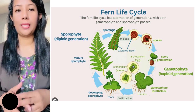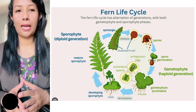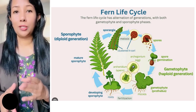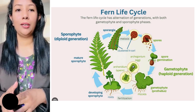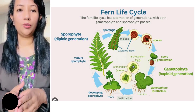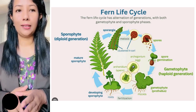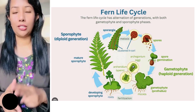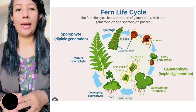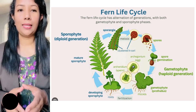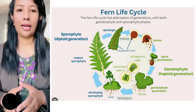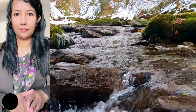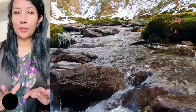Sporophyte reproduction is asexual, and it produces diploid spores from mother cells. Gametophyte has no spores and no mother cells. Gametophytes fuse to form a diploid zygote — that is two N. Sporophyte undergoes meiosis and there is no fertilization. So that's all for today, thank you for watching.